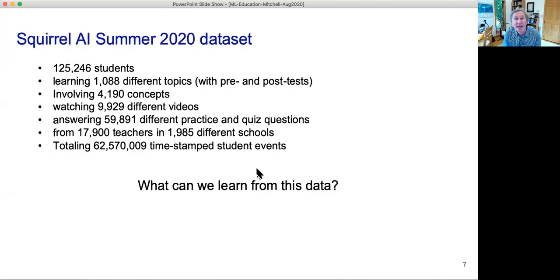What makes it particularly interesting is we have this for 125,000 students who are learning roughly a thousand different topics and watching roughly 10,000 different videos, being asked roughly 60,000 different kinds of questions, and adding up to a data file with 62 million time-stamped rows like the data we were looking at before.